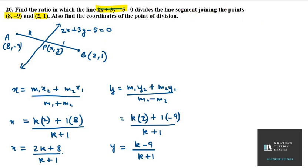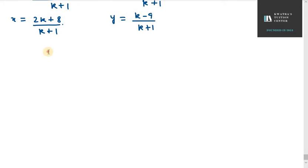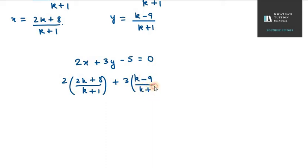So 2x plus 3y minus 5 equals 0. First you have to put the x value. So you have 2 times (2k plus 8), you have k plus 1. The first term has k plus 1, second term has k plus 1, but the third term does not have k plus 1, so you have to multiply the third term with k plus 1 and divide it with k plus 1.